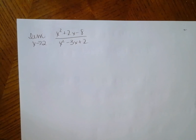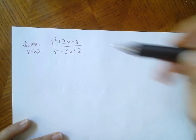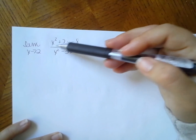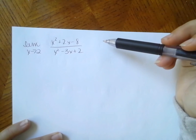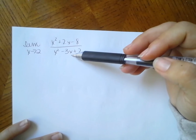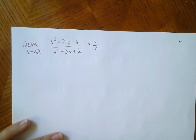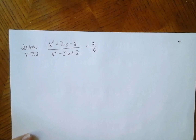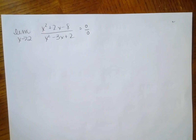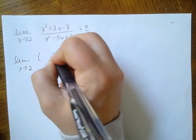So our first strategy for simplifying: the first thing we always want to do is check — do I have indeterminate form? I plug in 2, and I get 4 plus 4 which is 8, minus 8, so I get 0 on top. When I put 2 in the bottom, I get 4 minus 6 which is negative 2, plus 2, which is 0. So this is indeterminate form — I get 0 over 0 when I plug it in. That does not mean it's 0; it means there's an algebra trick we can do.